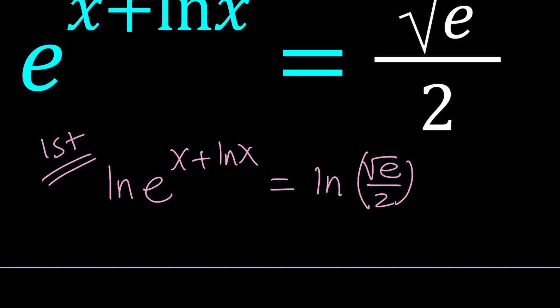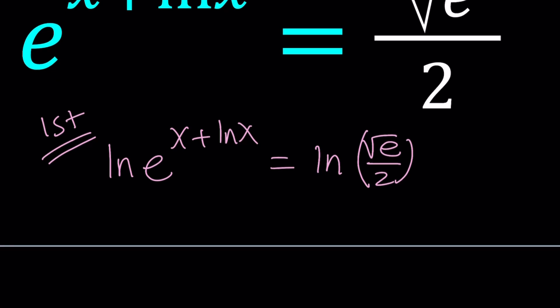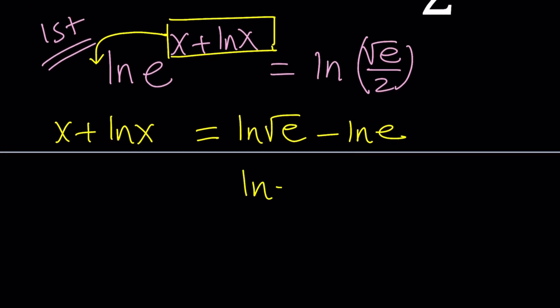We're going to be using properties of logs here so make sure you are familiar with them. First rule is the power rule. When there is the log of a power we can move that exponent to the front. So we can write this as x plus ln x multiplied by ln e which is 1. On the right hand side we have a quotient, so we can use the quotient rule and turn this into a difference. Square root of e can be written as e to the power one half and ln e is 1 so this is going to be minus 1.